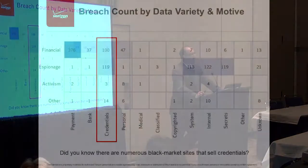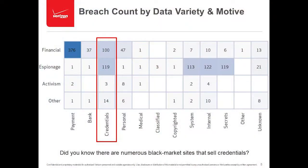Looking at breach count by data variety and motive, with a particular area highlighted around credentials: on the left-hand side you have the motivation behind the breaches — whether it's financial, espionage-related, activism, or a catch-all other. Along the bottom you have the different types of data impacted, whether it's payment information, theft of credentials, system information, internal information, trade secrets, or intellectual property.